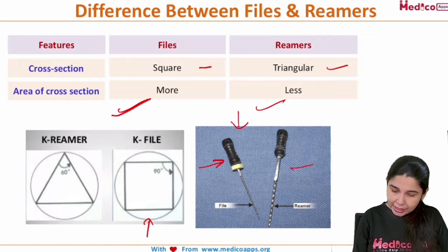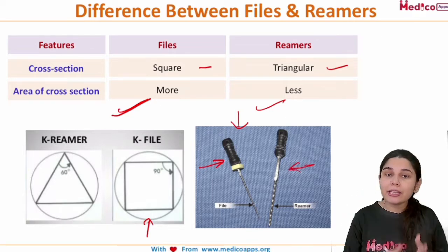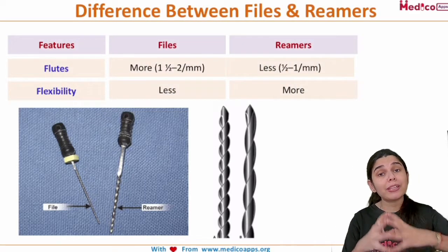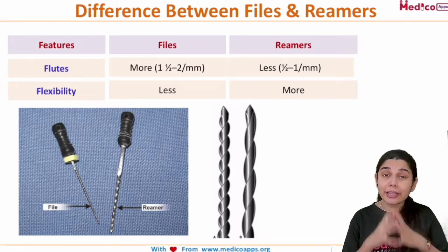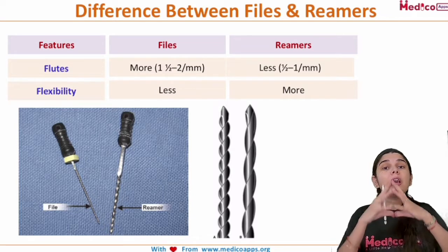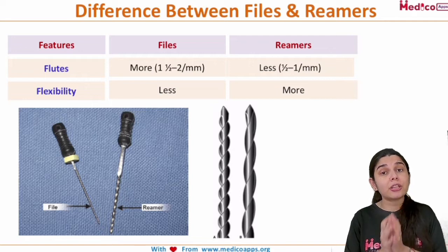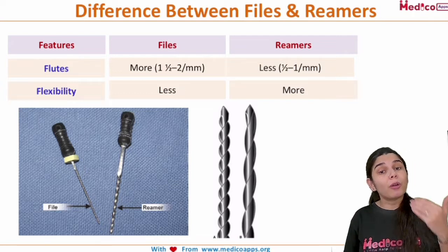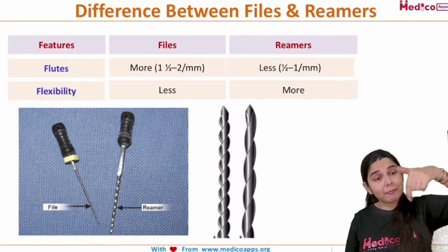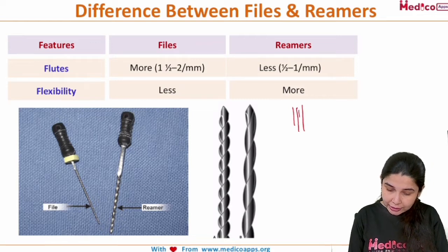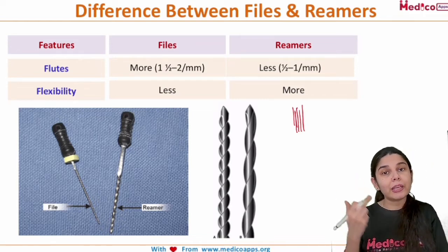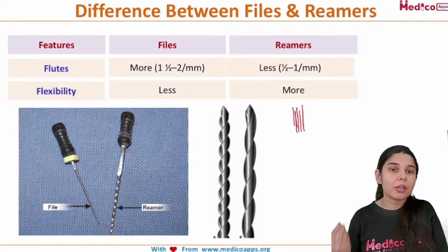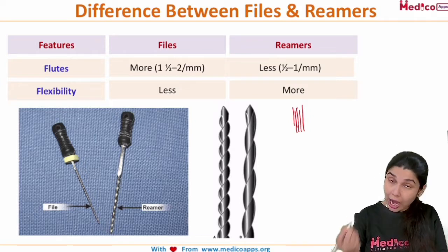As you can see in this image, these are the files and these are the reamers. Now, the third difference is about the fluids. What are fluids? If you have an instrument, the spaces present in between are known as fluids, also known as chip spaces. The fluids are more in files.